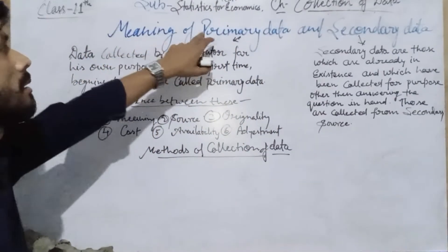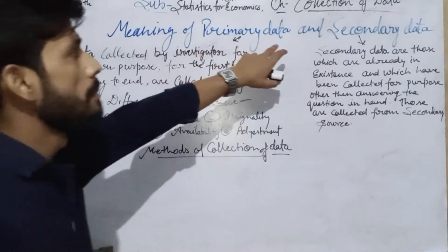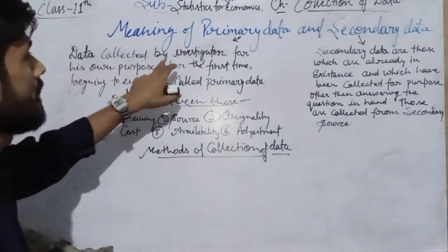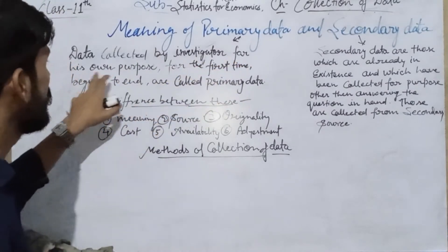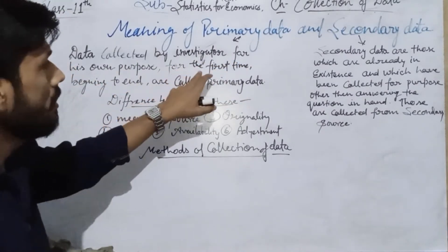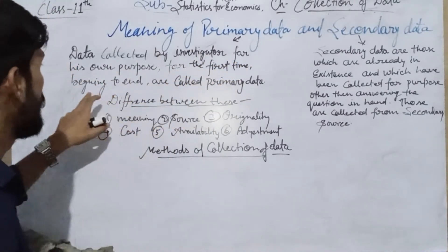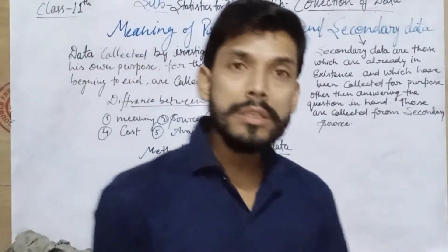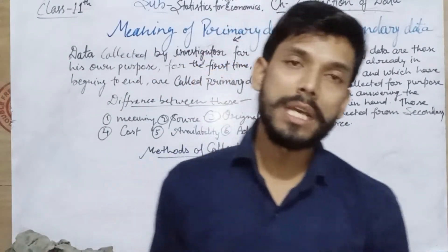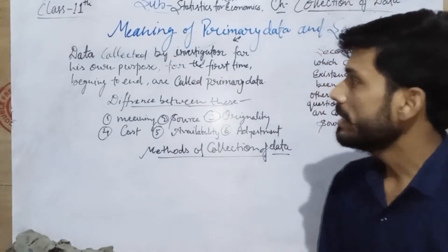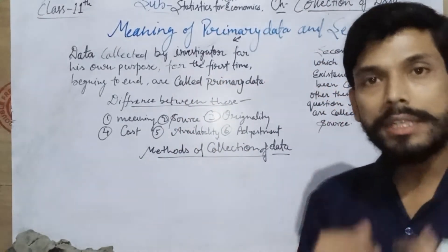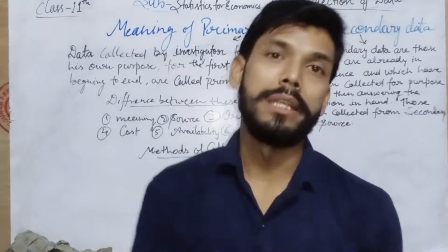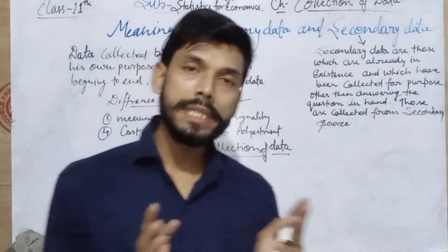Primary data means the data collected by the investigator for his own purpose, from the beginning to the end, for the first time. Whatever data is collected by the investigator for his own purpose, from the first time to the end, is called primary data.